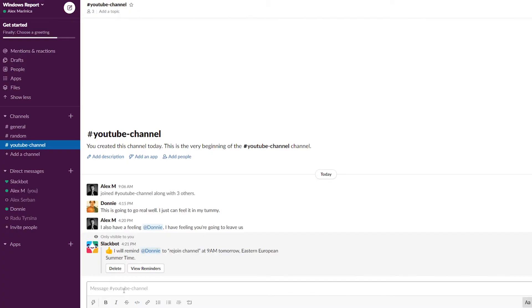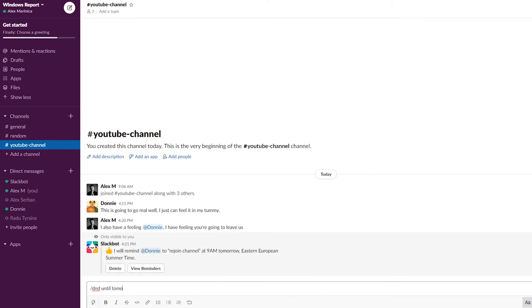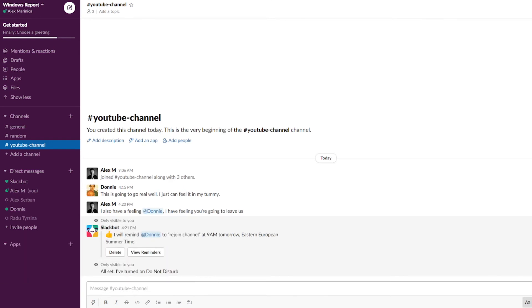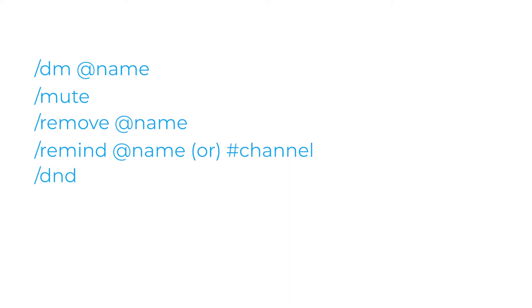Since we're focusing on workflow, let's not forget the mighty forward slash dnd — be it 30 minutes, until 5 p.m., or until tomorrow morning — this will mute all notifications from Slack for the specified duration. Final recap: slash DM at name for a direct message from any window, slash mute to mute a conversation or channel, slash remove at name to kick someone out, slash remind at name or hashtag channel what and when to set a reminder, and slash dnd followed by a set amount of time to go into do not disturb mode.